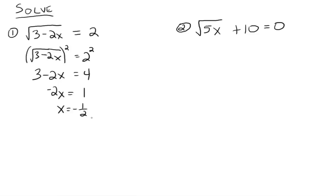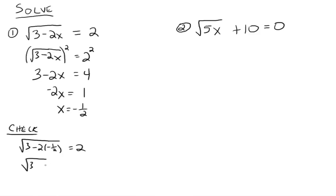There's one extra thing we need to do when solving radical equations: make sure that you check your possible solutions, because sometimes they will work and sometimes they won't. Negative 1 half is definitely a solution to the simplified equation, but it may or may not be a solution to your original equation, because it has slightly been changed. They're equivalent, but not exactly the same. Take the negative 1 half — that's the square root of 3 plus 1, which is the square root of 4, which does equal 2, so it checks. Negative 1 half is indeed a solution.